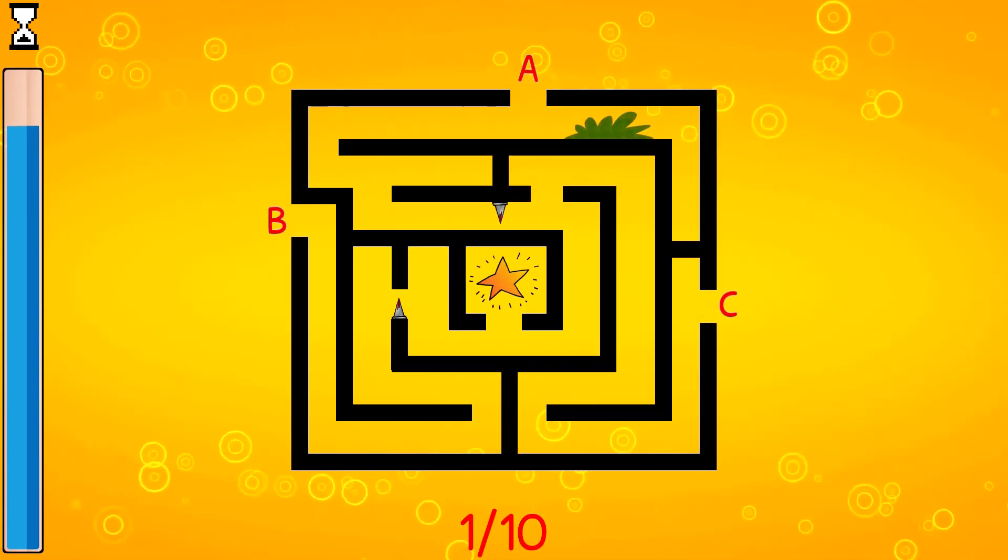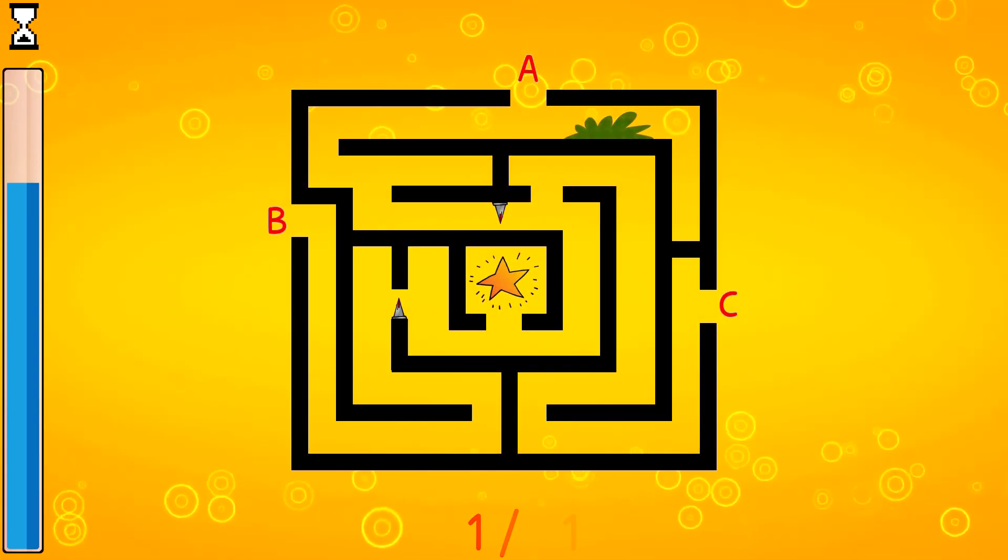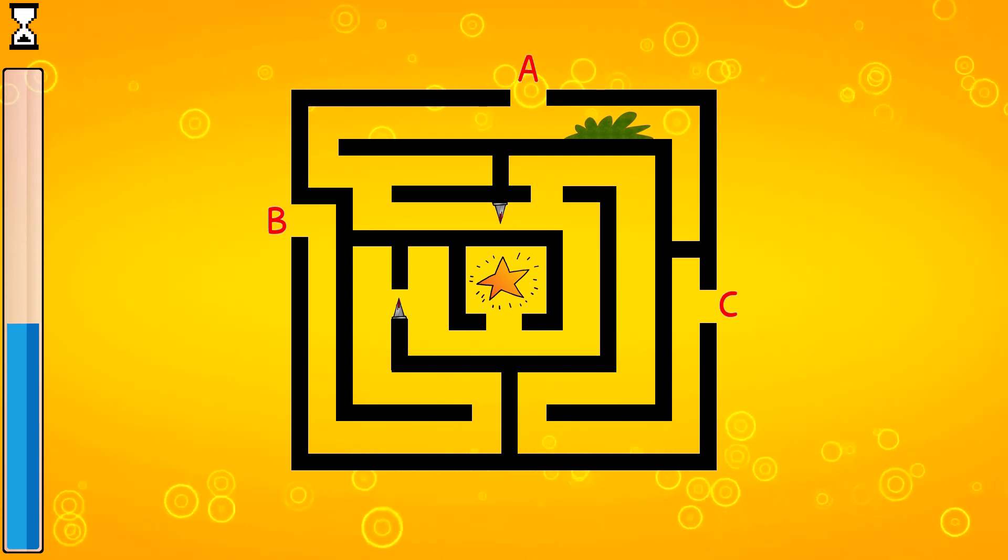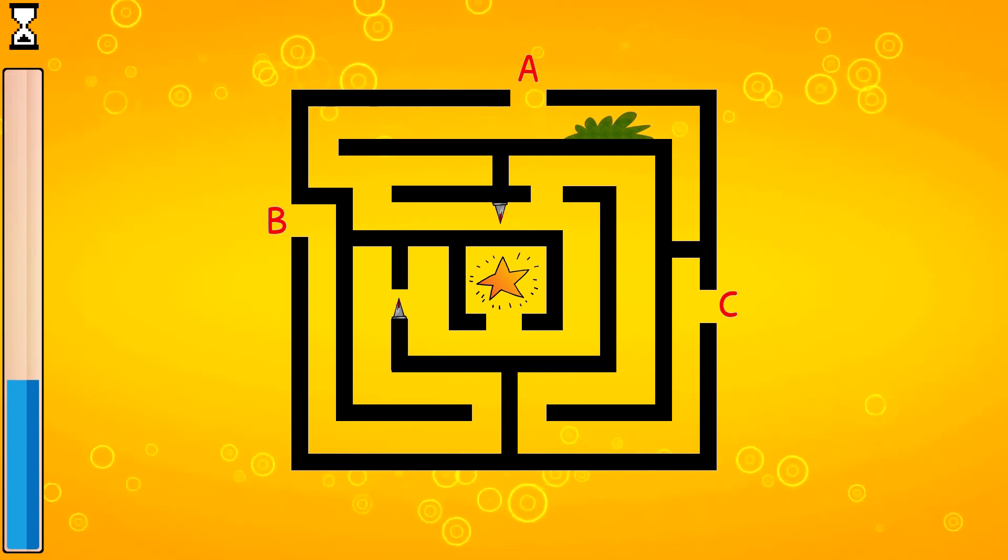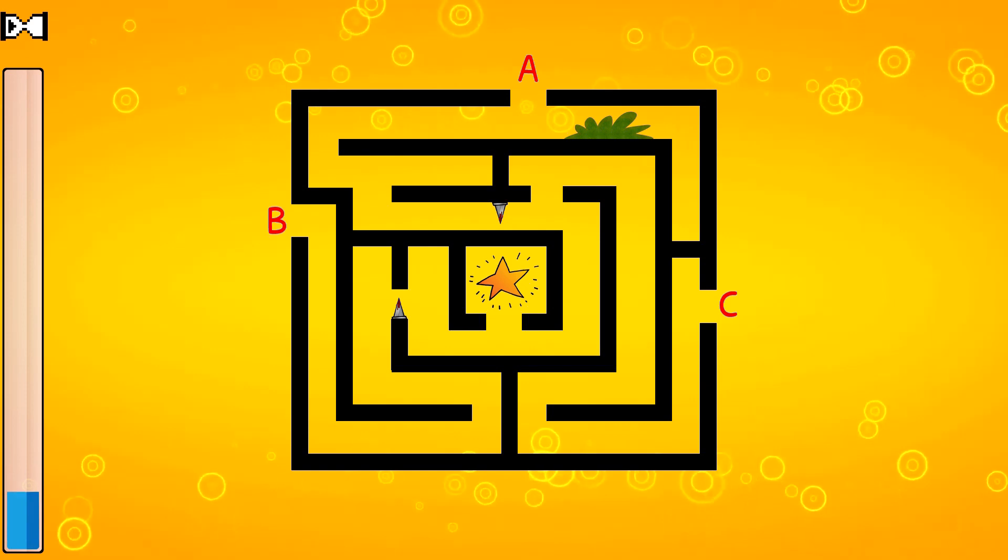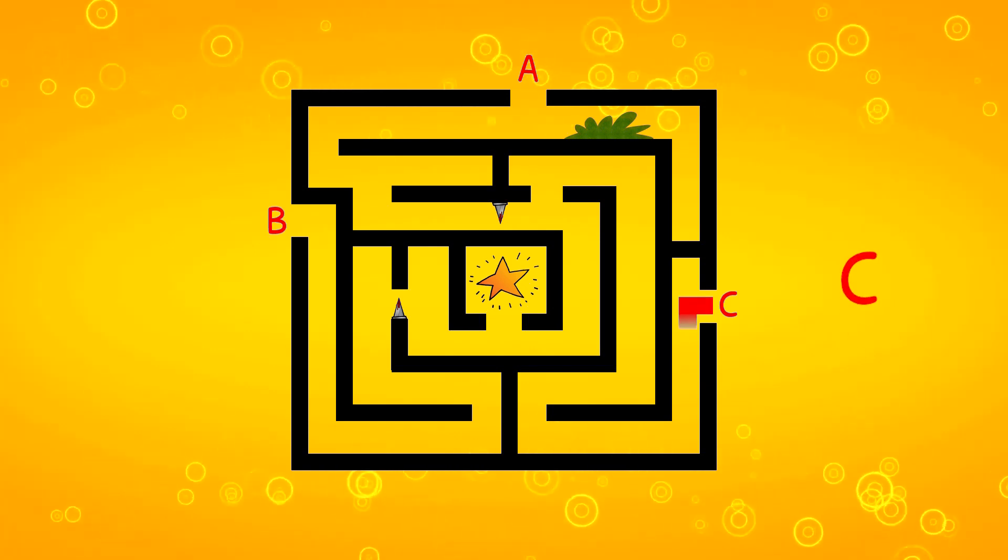You can pass through bushes, but you cannot pass through thorns. Now, choose the path that leads to the star before time runs out. The answer is C.